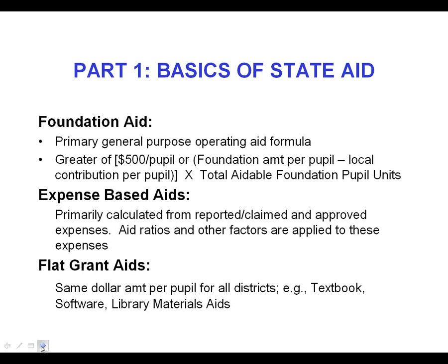That $500 per pupil is called a flat grant, and that goes back to the first slide where the state constitution says that education is really a shared state and local responsibility. The way that translates into money in foundation aid is that any school district, regardless of how wealthy they are or what their local fiscal capacity is, gets at least $500 per pupil in foundation aid.